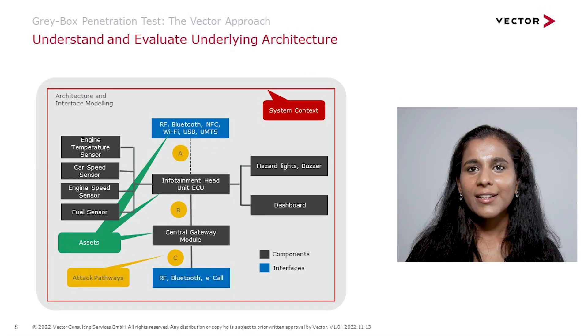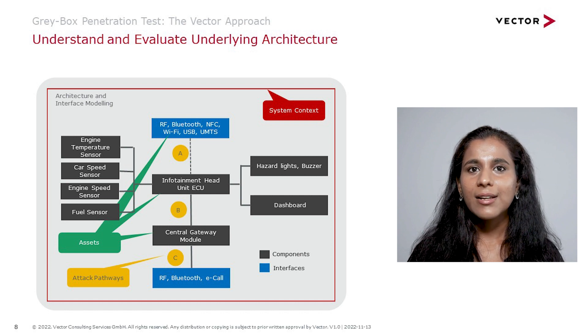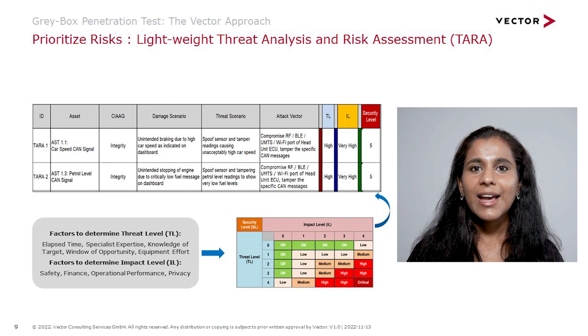Once we understand the scope and the content, we can start the analysis step. Next is to make a structural analysis of the underlying architecture — to know the components and networking helps us understand the different assets that need to be protected and their attack pathways. We then create a lightweight TARA, which is used to understand the threats and acts as an input to derive the penetration test cases. Mostly we do not get the TARA from the client, so we perform a lightweight TARA based on the documents we have so far.